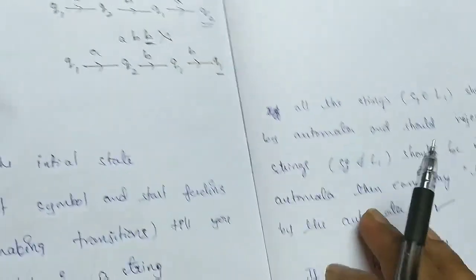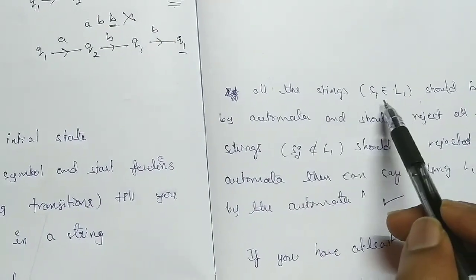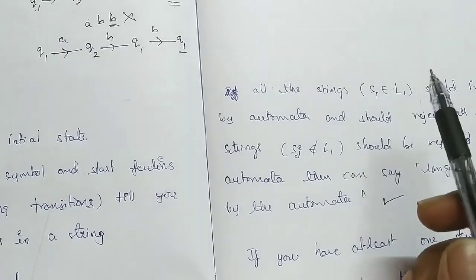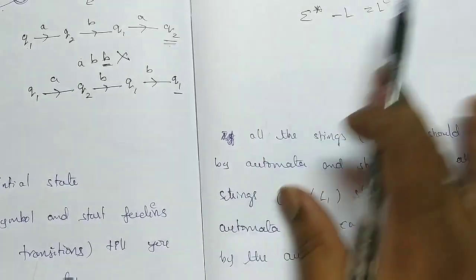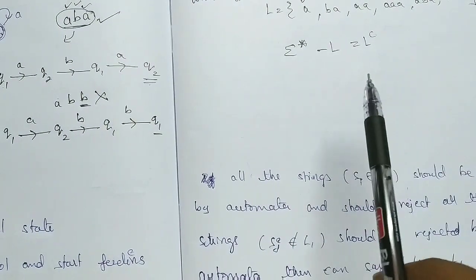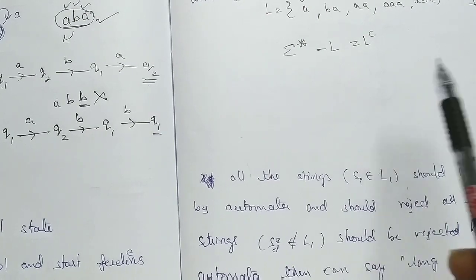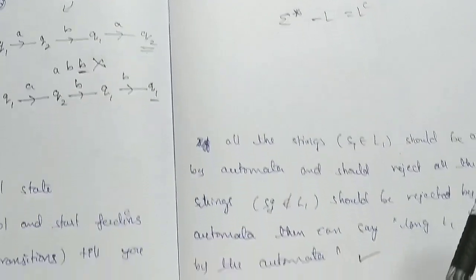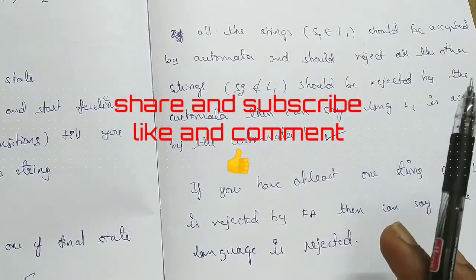What is language-wise acceptance here? All the strings SI belonging to L should be accepted by the finite automata. If at all you want to accept all strings in L and reject everything else, we can say that particular automata is accepting the language.